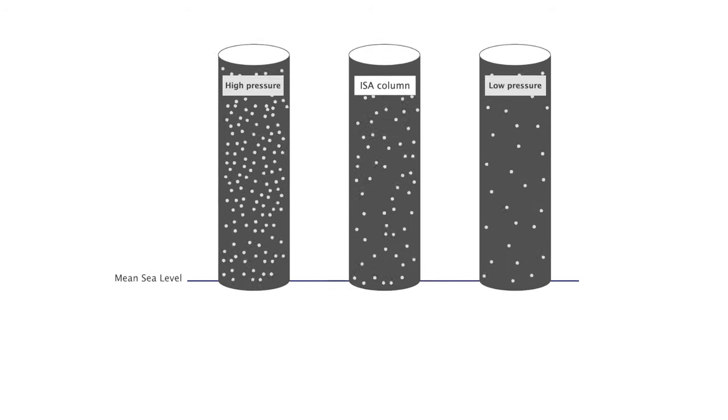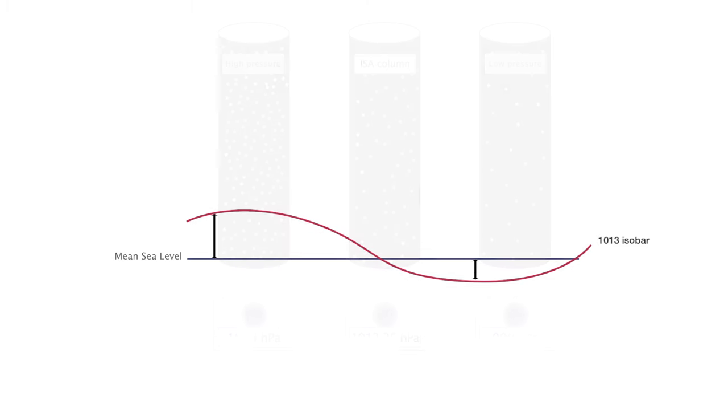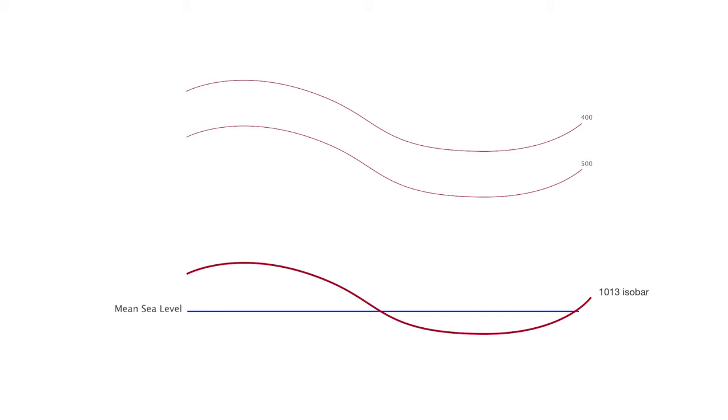If we consider the ISA air column, the pressure at sea level is 1013 hPa. The 1013 hPa isobar is above sea level in the high pressure air column and below sea level in the low pressure one. Let's add more isobars up to 400 hPa. In ISA, the distance between the isobars is constant.